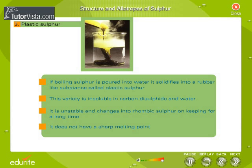Plastic sulphur is formed when boiling sulphur is poured into water, solidifying into a rubber-like substance. This variety is insoluble in carbon disulfide and water. It is unstable and changes into rhombic sulphur on keeping for a long time, and it does not have a sharp melting point.